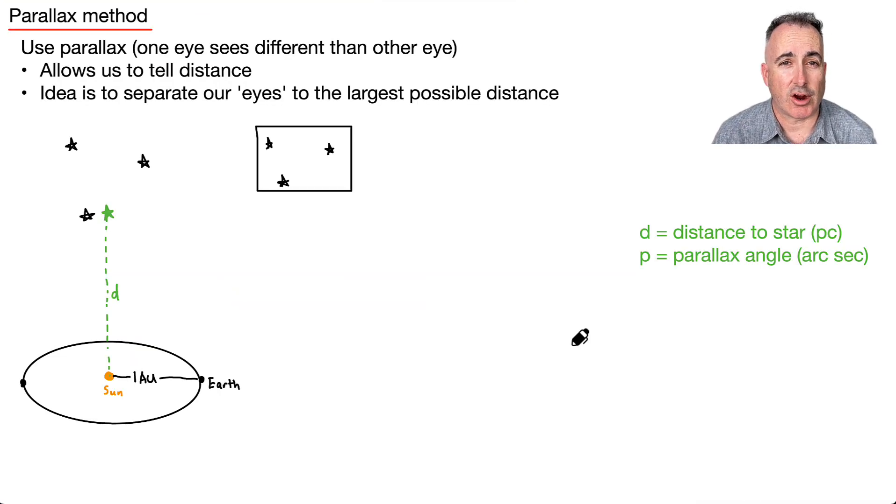Now a method to tell the distance to stars is called the parallax method. It's really cool—it's actually your eyes, as long as both your eyes work. If you held out your thumb, try to open one eye and look at your thumb, then switch which eye is open. You'll see your thumb appears to jump, it appears to move.